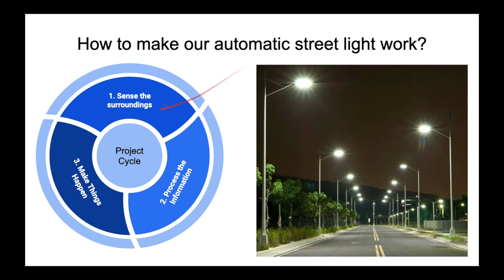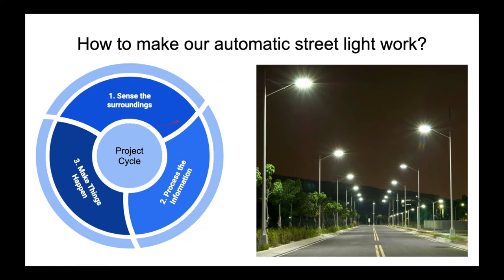So how does it work? First step: sensing the surrounding. In the automatic street light project, we have to sense the surrounding light information — that is, how much light is there in our surroundings. Second step: processing the information. Based on this light input, we have to decide whether to switch on or switch off the light. And the third step: we can either switch on or switch off the light.